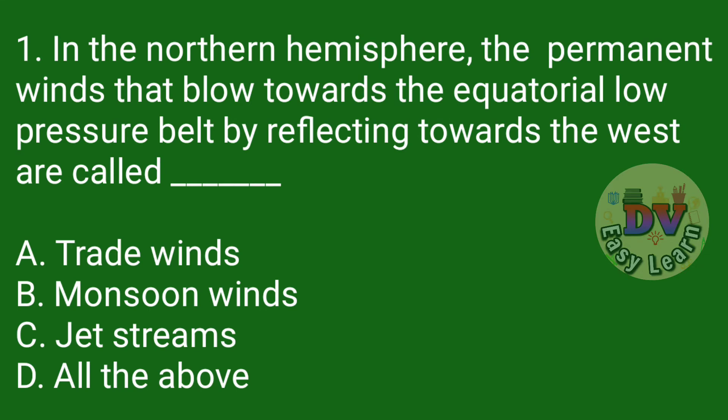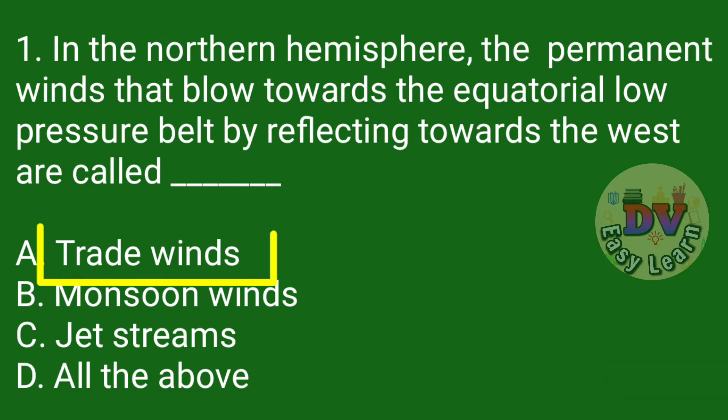Question number 1. In the northern hemisphere, the permanent winds that blow towards the equatorial low pressure belt by reflecting towards the west are called — Correct answer: Trade winds.